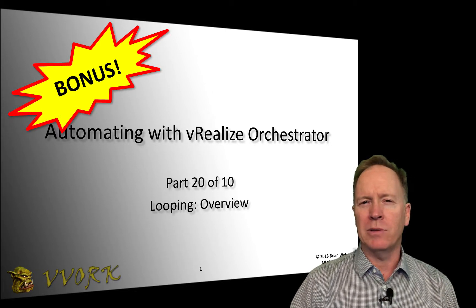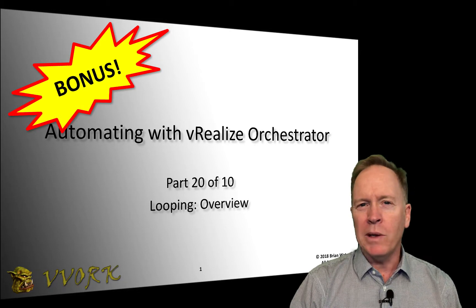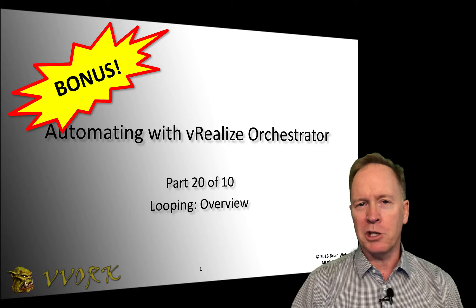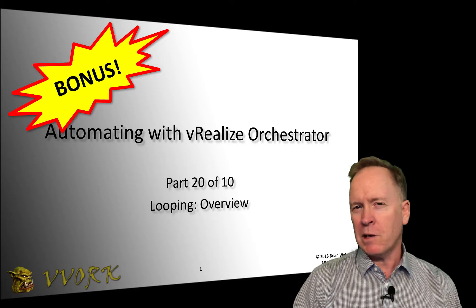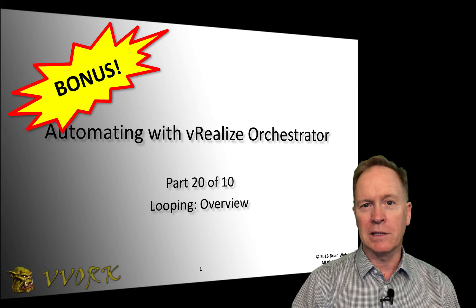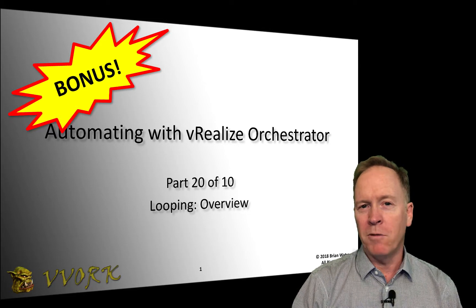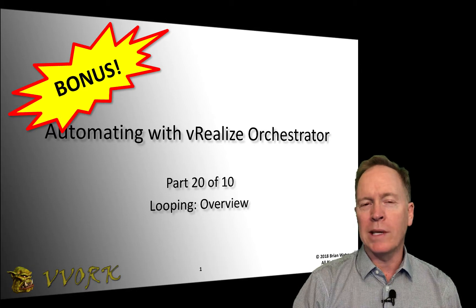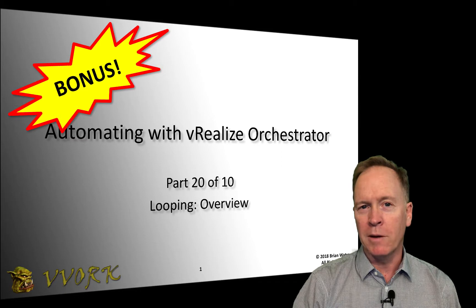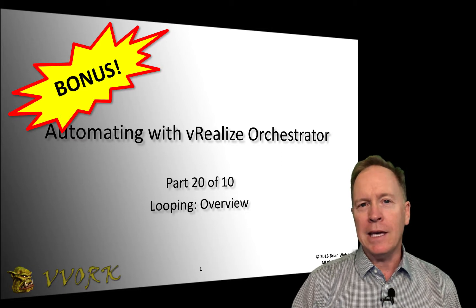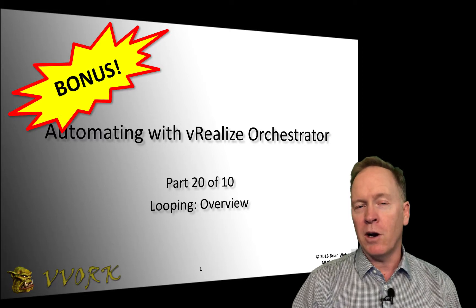Way back in module number nine, we learned how to create an Orchestrator workflow that creates a single virtual machine. But what if you need to create 10 virtual machines, or 100 virtual machines, or 1000 virtual machines? That workflow we saw before isn't going to cut it. What you need is to be able to employ some type of looping in your workflow. And that's what we're going to be talking about here in video number 20 and the following few videos — they're all going to be about looping in one form or another.